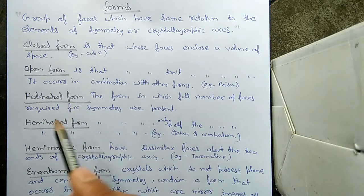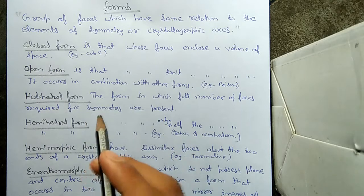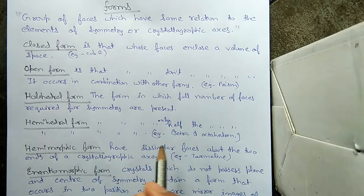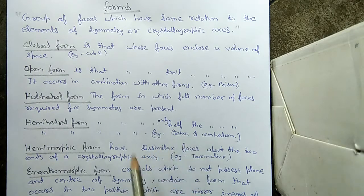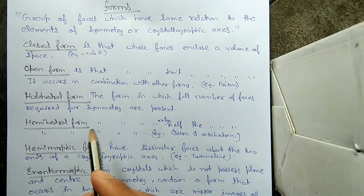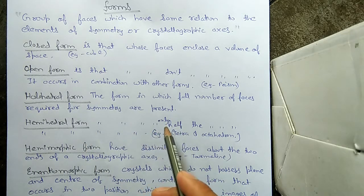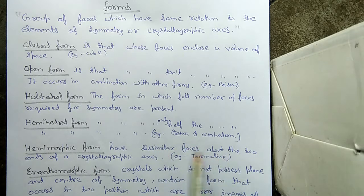The next one is the holohedral form. It is a form in which the full number of faces required for symmetry are present. Next is the hemihedral form — 'hemi' means half — so the form in which only half the number of faces required for symmetry are present is called a hemihedral form, and its examples are the tetrahedron and octahedron.